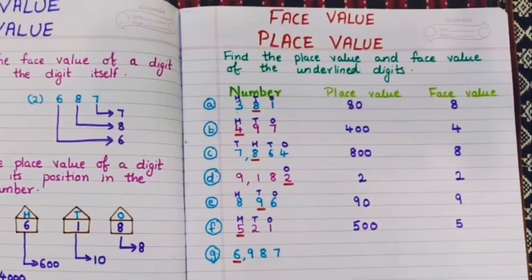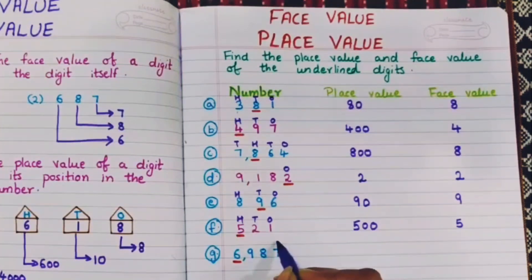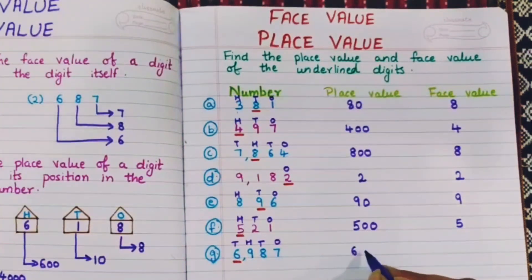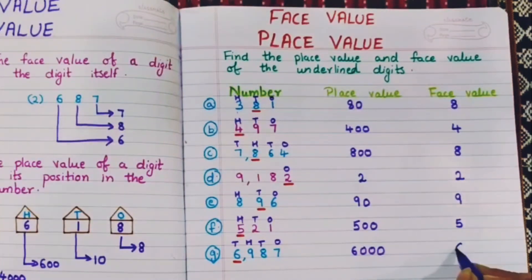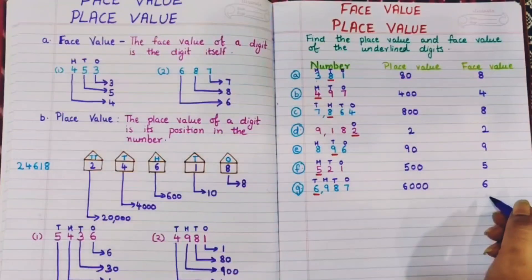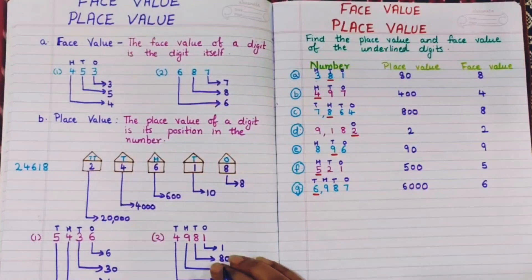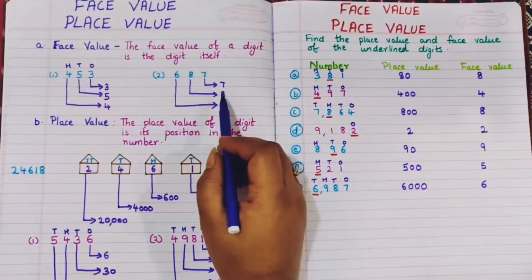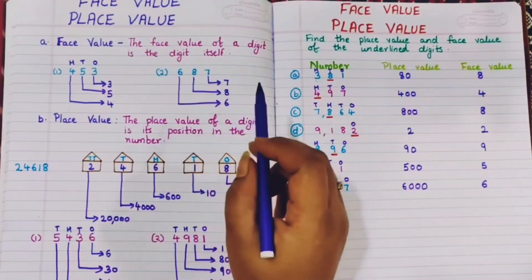Next, 6987. Positions: ones, tens, hundreds, thousands. 6 is in the thousands place, so the place value is 6000 and the face value is 6. I hope face value and place value are clear. Face value is the number itself — whatever number they ask, the face value is the digit itself.